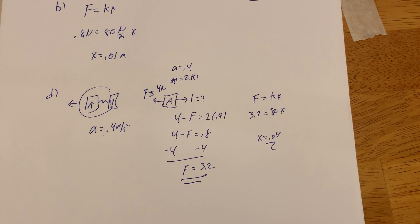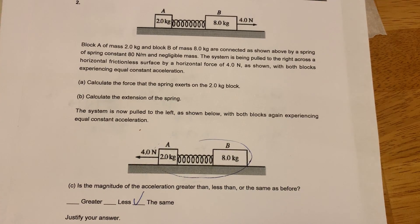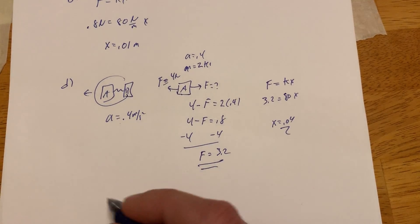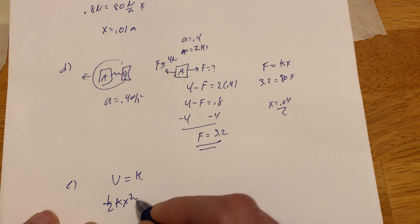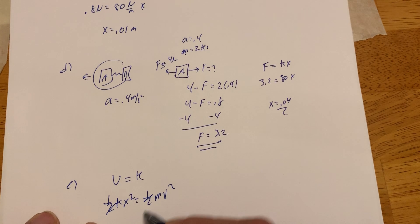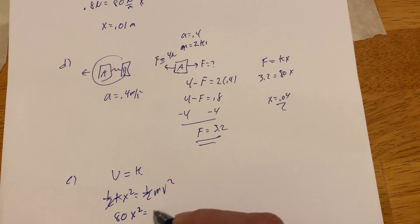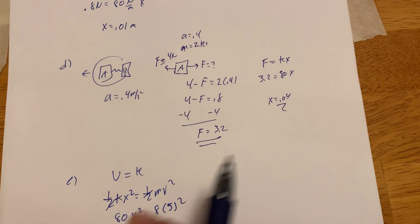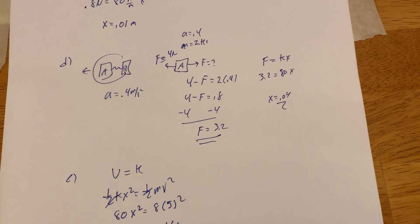Part E: in a new situation, the block and spring are moving together at a constant speed of 5 meters per second to the left. Block A hits the wall and sticks — calculate the maximum compression in the spring. Block A stops but B continues, so: ½kx² equals ½mv². So 80x² equals 8 times 5 squared, giving a maximum compression of about 1.6 meters.